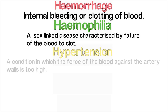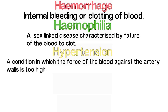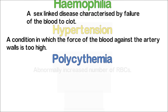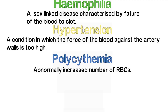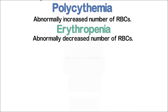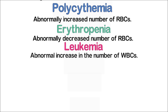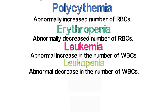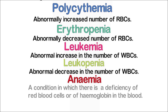Hypertension is a condition in which the force of blood against the wall of the artery is very high; it is also known as high blood pressure. Polycythemia is an abnormally increased number of RBCs. Erythropenia is when the number of RBCs is decreased below normal. Leukemia is an abnormal increase in the number of WBCs. Leukopenia is an abnormal decrease in the number of WBCs. Anemia is a condition in which there is a deficiency of red blood cells (erythrocytes) or a deficiency of hemoglobin in the blood.